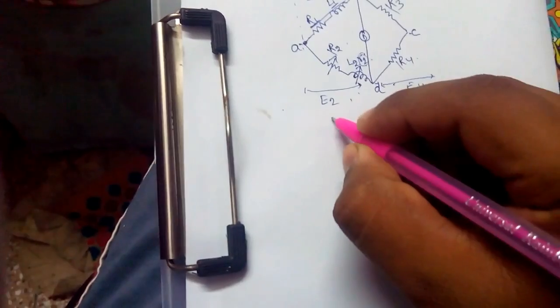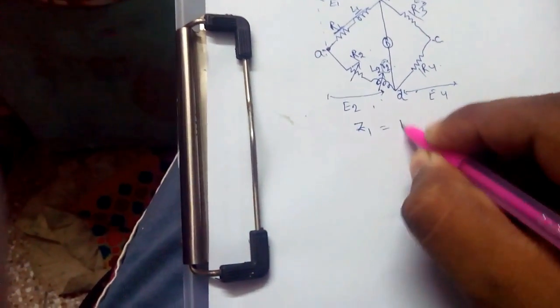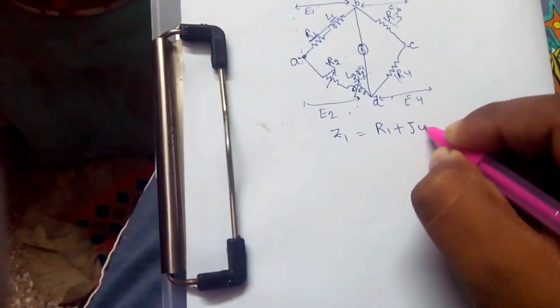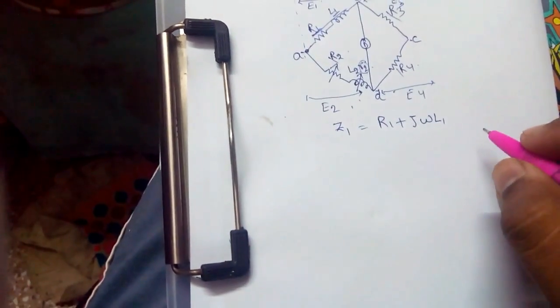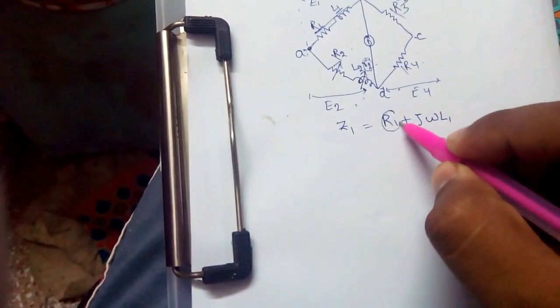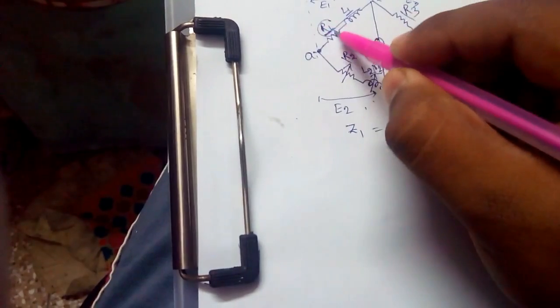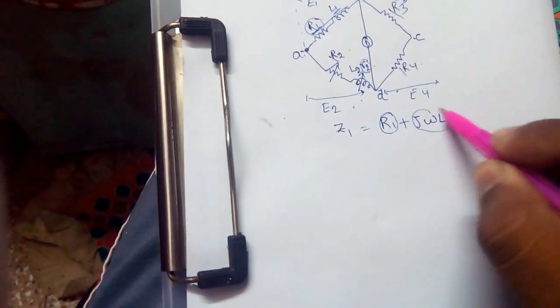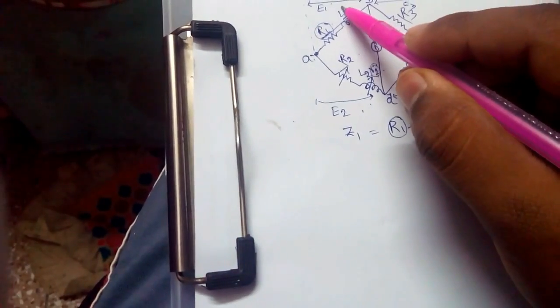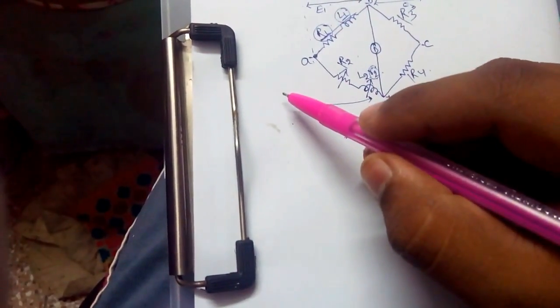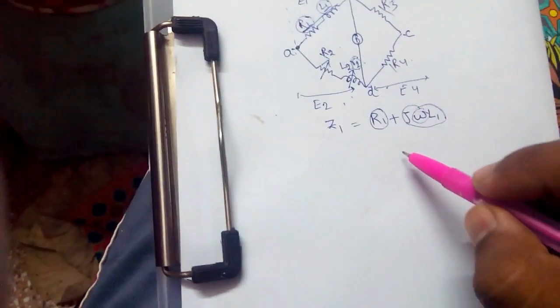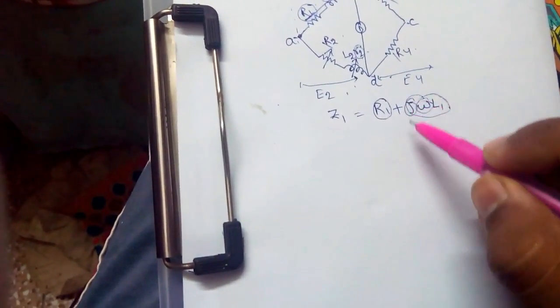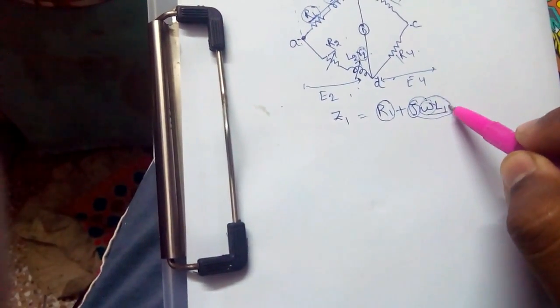Now we will find the impedances. Z1 would be R1 plus j omega L1, where R1 is for the non-inductive resistance and j omega L1 is for the inductance. Omega is the frequency factor and j is the imaginary part for L1.